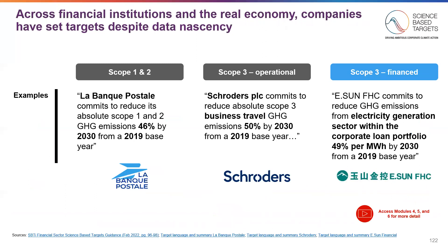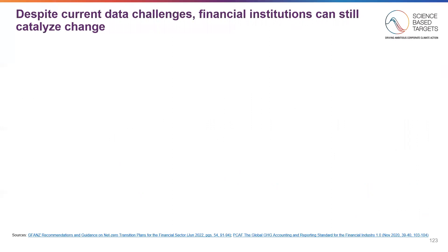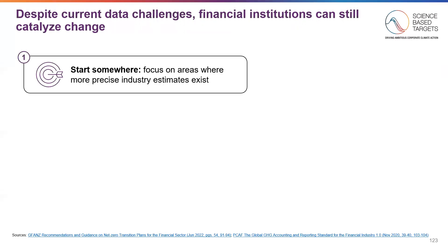Across financial institutions and the real economy, companies are setting targets despite data nascency. There are several examples across Scope 1 and 2, Scope 3 operational, and Scope 3 finance where everyone is able to set targets despite the nascency — and you can learn more about these specific examples in Modules 4, 5, and 6. Even with current data challenges, financial institutions should focus on areas where more precise industry estimates exist. Since financial institutions are required to set headline targets, peers across the industry may only be covering 10, 15, or 20% of their portfolios with current targets, but investment has been made in taking action on climate mitigation.